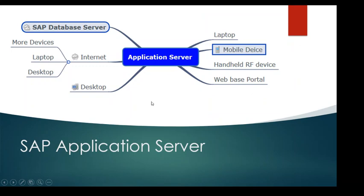The application server connects to the database server, which in turn connects to a laptop, mobile device, or RF device that accesses the application server. These three components form a circle: database server in the background, application server in the middle, and the presentation device connecting to it. This mind-map representation helps make the architecture easier to understand.